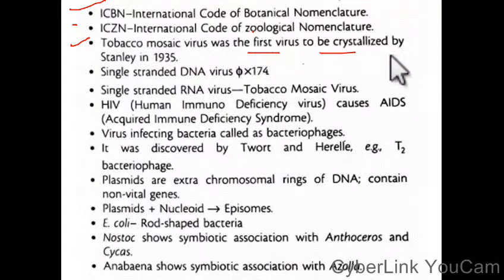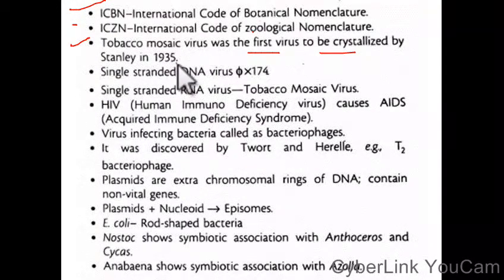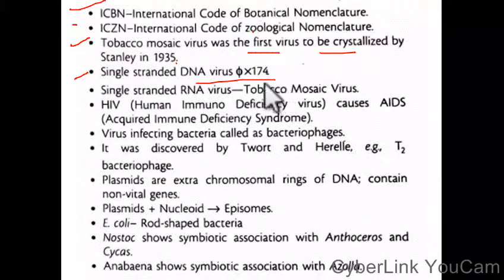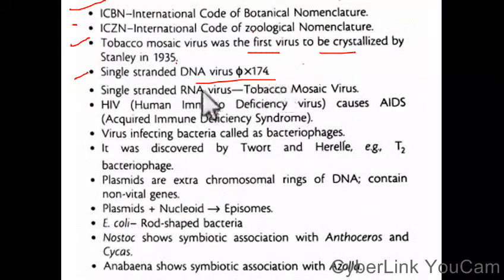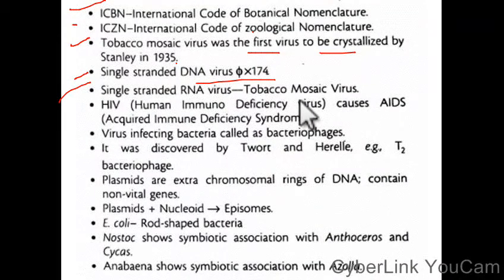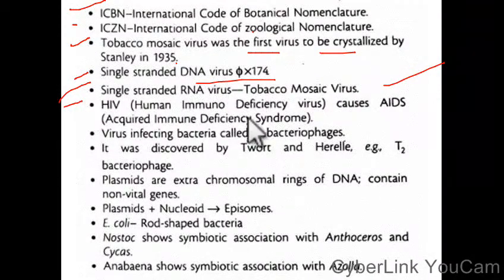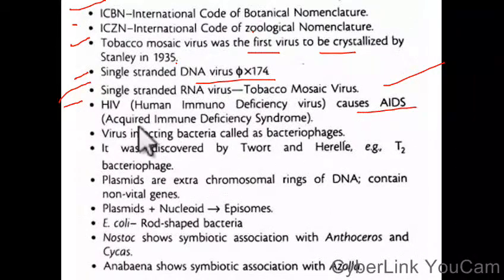Tobacco mosaic virus was crystallized by Stanley in 1935. It is a single-stranded RNA virus. HIV, human immunodeficiency virus, causes immunodeficiency syndrome. Viruses that infect bacteria are called bacteriophages.